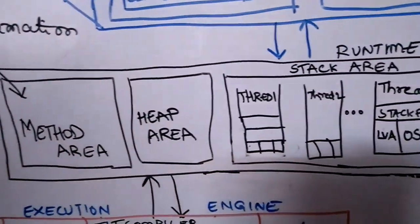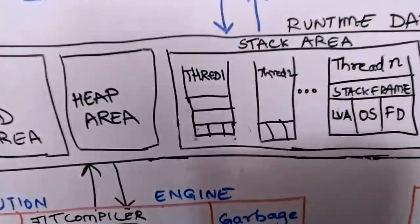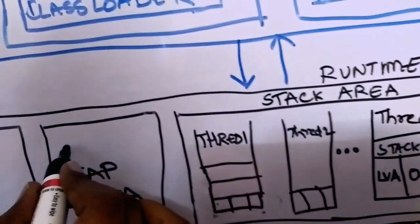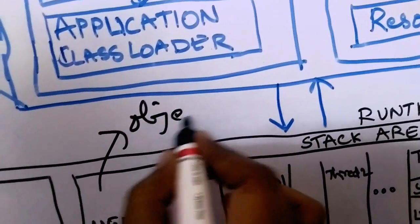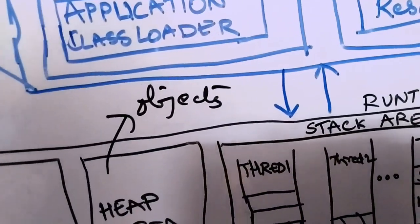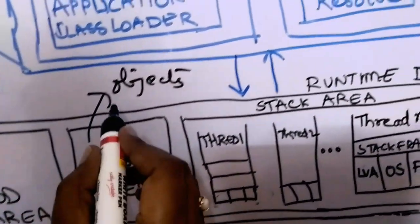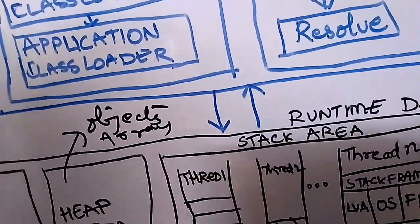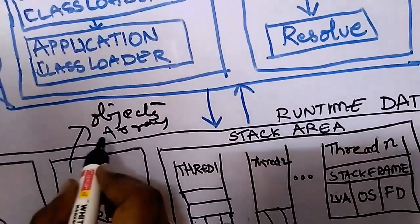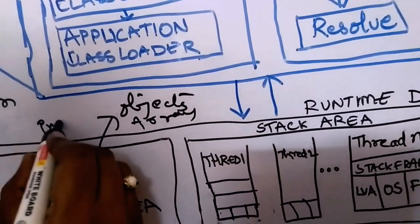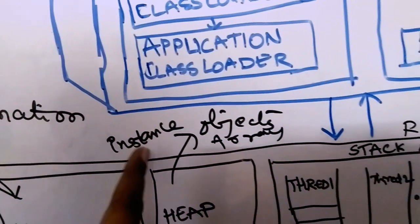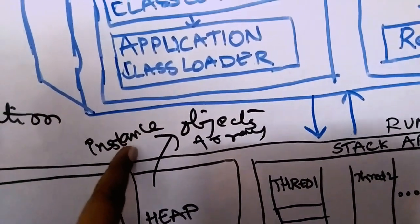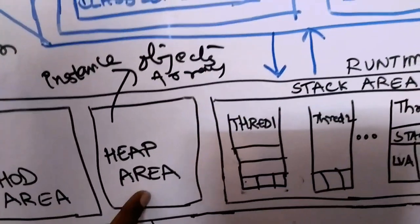The next memory area is the heap area. In the heap area all objects will be stored. Since arrays are also objects, arrays will also be stored here. Instance variables — since they are associated with objects — are also stored in the heap area.